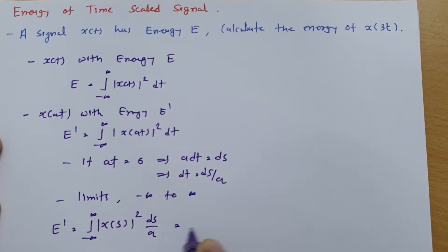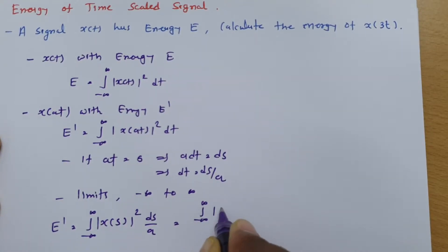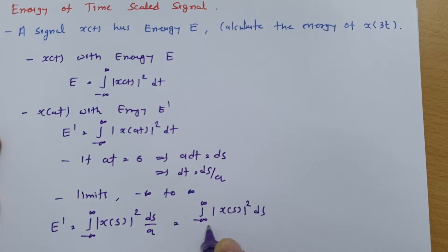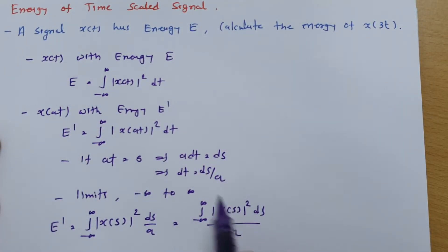So we can say this is integral from minus infinite to infinite |x(s)|² ds divided by a. Now this is the energy of x(t). So I can say this is E divided by a.